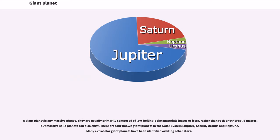A giant planet is any massive planet. They are usually primarily composed of low boiling point materials, gases or ices, rather than rock or other solid matter, but massive solid planets can also exist.